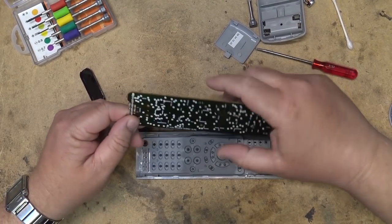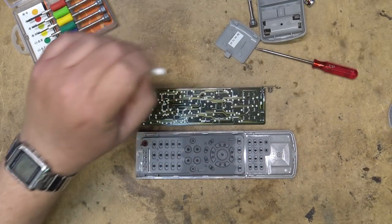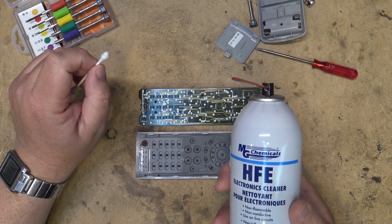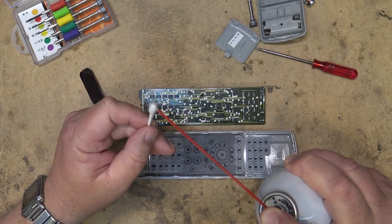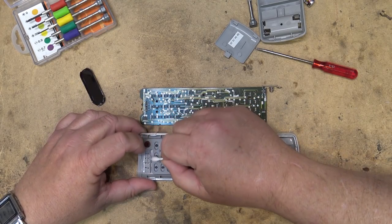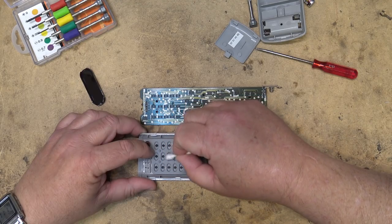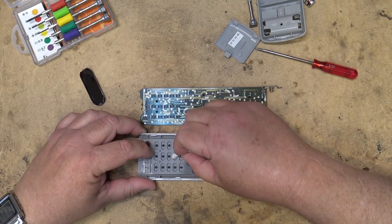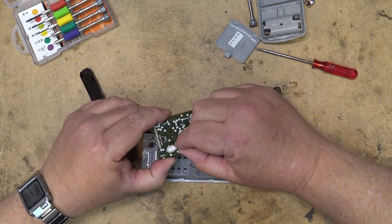Sorry about the focus, my camera had somehow switched itself to manual focus and I didn't notice initially. I'm going to use HFE cleaner. We're just going to spray the HFE cleaner onto a Q-tip. We're going to go over and clean all of the rubber pads and clean the circuit board.